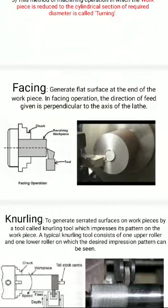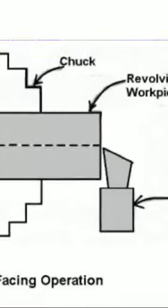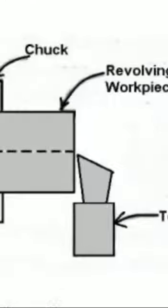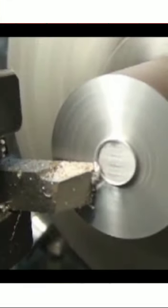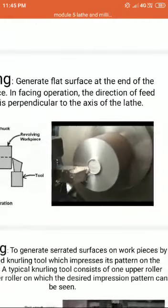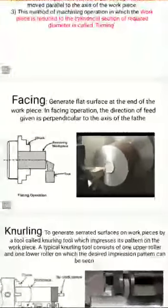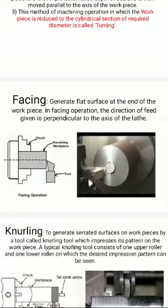Next, we'll discuss facing. Facing means we have to produce a flat surface at the end of the workpiece. Assume this is the workpiece — at this end we have to produce a flat surface. One thing here: the direction of feed given is perpendicular to the axis of the lathe. This is, in general, facing.